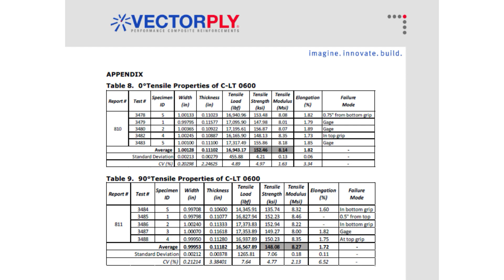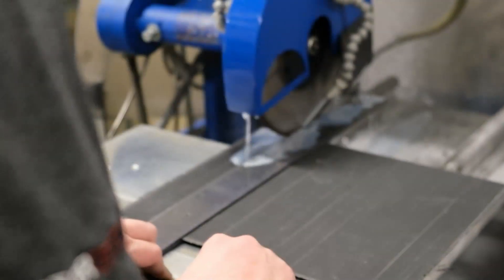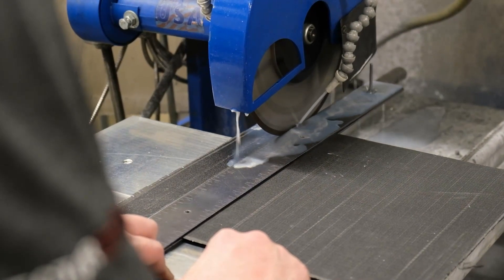Properties are typically tested in the 0 and 90 degree directions. Vectorply customers can submit their own panels for testing, or our team can provide services from start to finish — from initial laminate design and test panel fabrication through test specimen machining and mechanical testing. Our goal is to provide customers with the technical data they require while also saving them time and money.